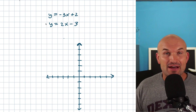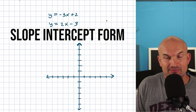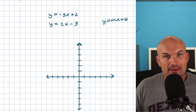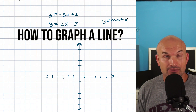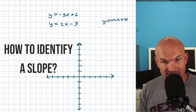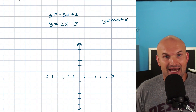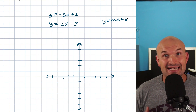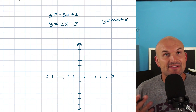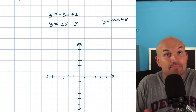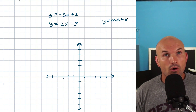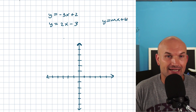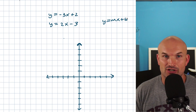For these three basic examples, we're going to have everything already written in slope-intercept form, also known as y equals mx plus b. We want to identify the y-intercept, identify the slope, graph the lines, and then find the intersection point. If there's no intersection point, the lines are parallel and there's no solution. If they're the exact same line, then we have infinitely many solutions.